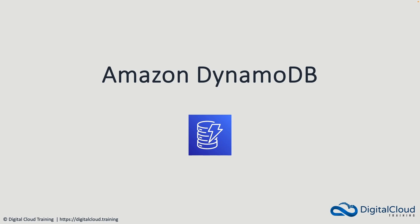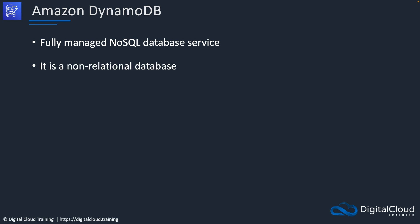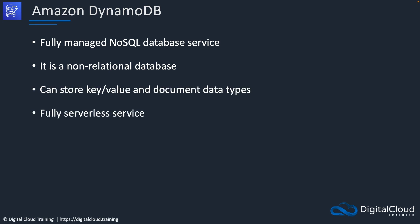In this lesson I'm going to cover Amazon DynamoDB. DynamoDB is AWS's database — they created it completely themselves. It is a fully managed NoSQL database service, so it's a non-relational, non-structured SQL type of database. It can store key-value and document data types and it's fully serverless.